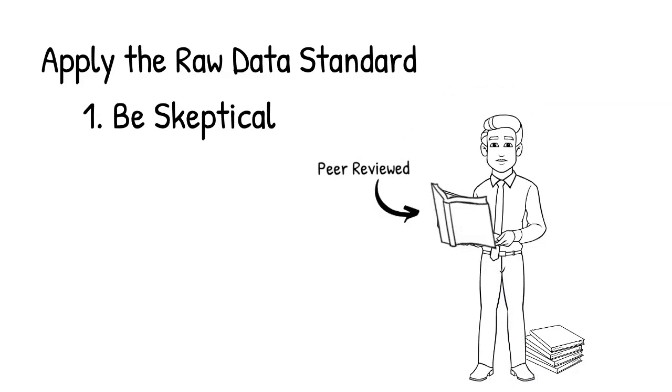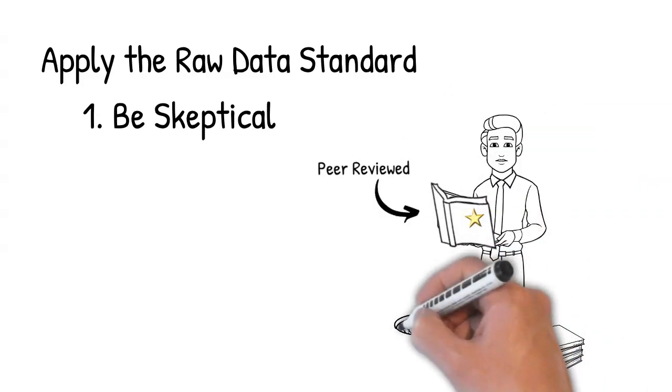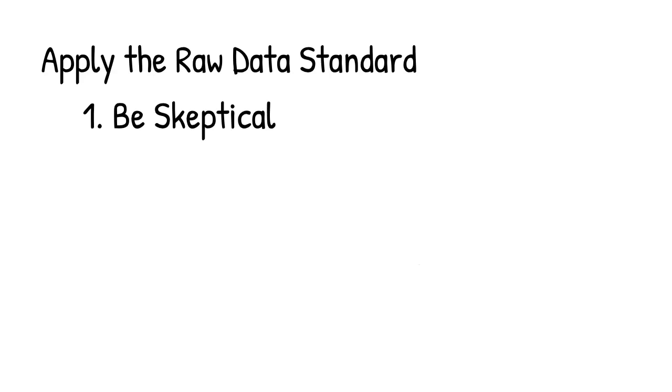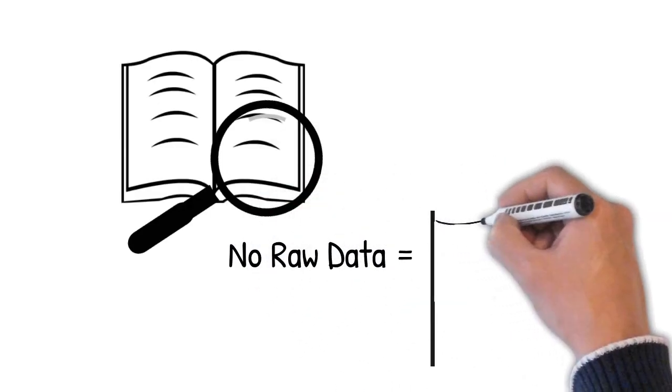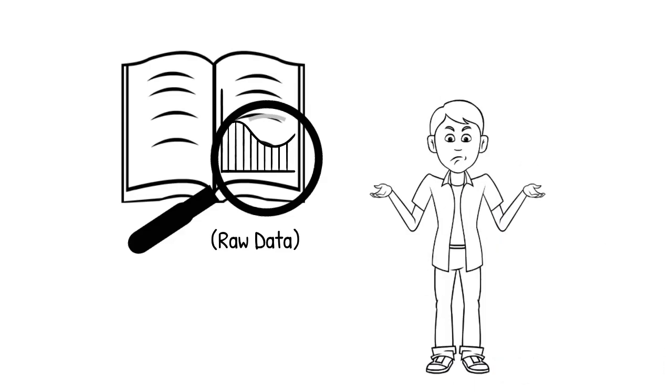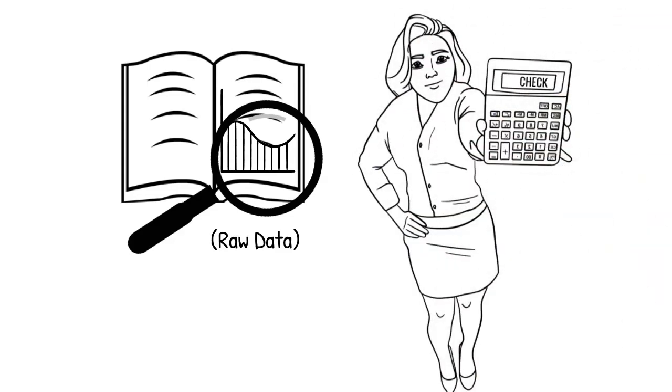Even the peer review process, which is called the gold standard of academic integrity, has produced thousands of papers that have been retracted due to errors and deliberate fraud. Bottom line: when people don't readily share their raw data, it's a big red flag. Even if you don't have the math skills to check their work, other people do. And when raw data is available, everyone can check everyone else's results. This is how good science works.